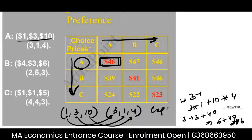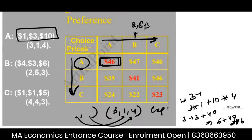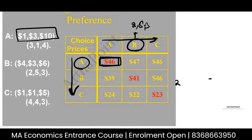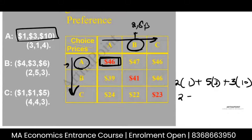Similarly, if I hold the price constant at 1, 3, 10 and ask what happens for the new bundle 2, 5, 3 — the prices are still 1, 3, 10. How much money would I be spending? My bundle is now 2, 5, 3 and prices are 1, 3, 10. So this gives me 2 plus 15 plus 30 = 47. This is not affordable because the maximum I can afford is 46.